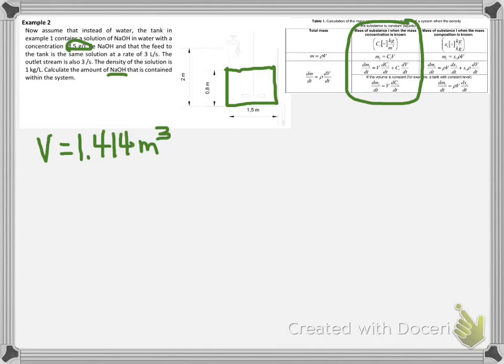in order to find the mass of sodium hydroxide inside of our system. The mass of sodium hydroxide will be the concentration of sodium hydroxide within our system times its volume. We know the concentration is 5 grams per liter,